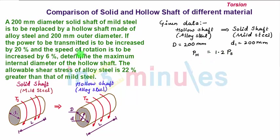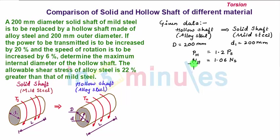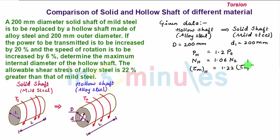The speed of rotation is also increased by 6%, so N_H = 1.06 × N_S. Also, the allowable shear stress for alloy steel (hollow shaft) is 22% greater than that of mild steel (solid shaft), so τ_max(H) = 1.22 × τ_max(S).